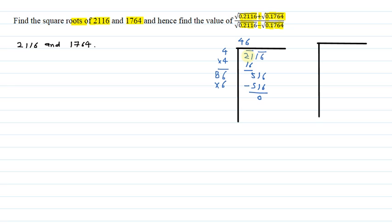So the square root of 2116 is 46. Moving to the next number, 1764: we apply the same long division method. We pair the digits. 4 into 4 is 16. Bringing down the next digits, we divide to get 164. The remainder is 0, giving us a square root of 42.